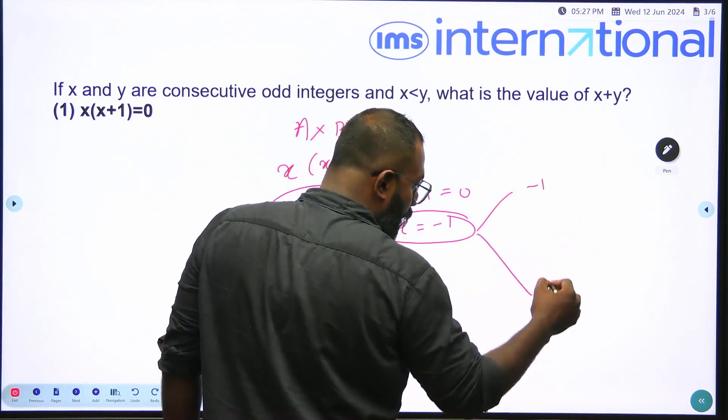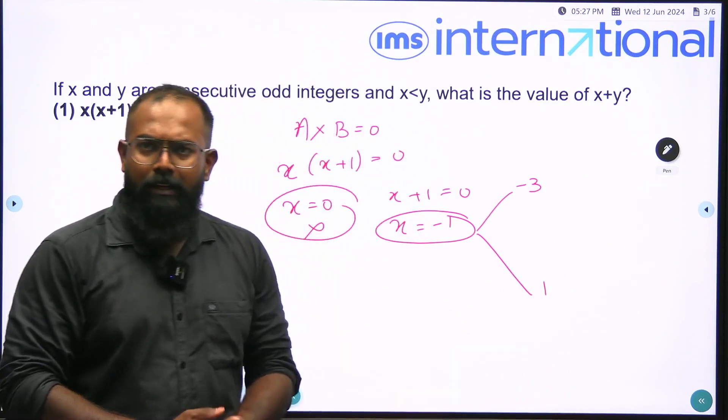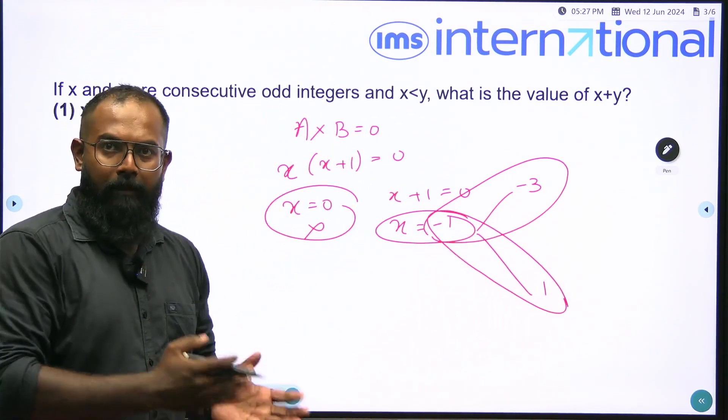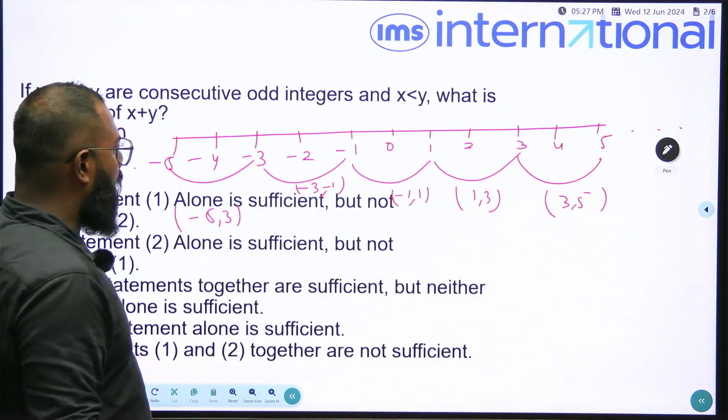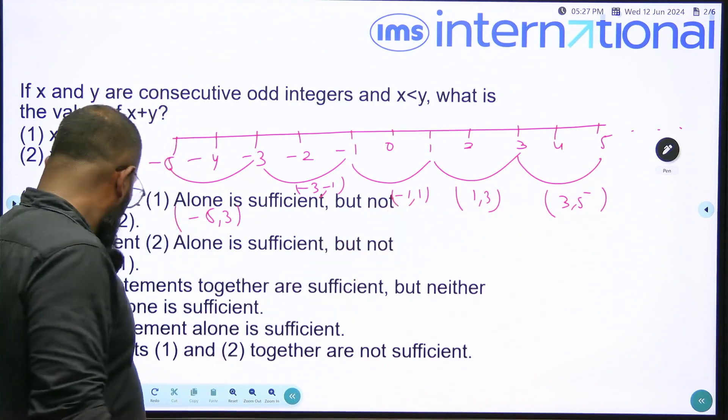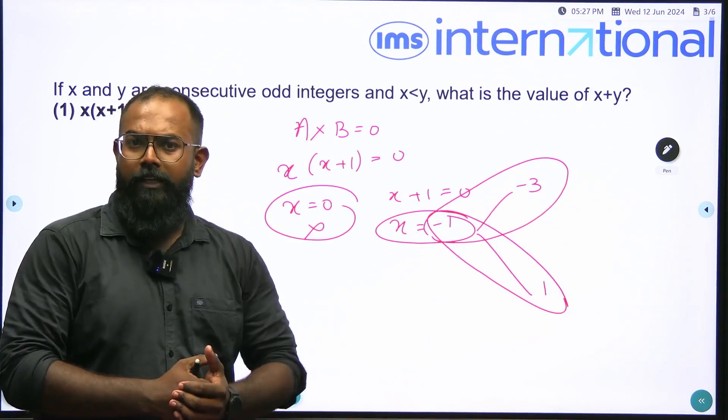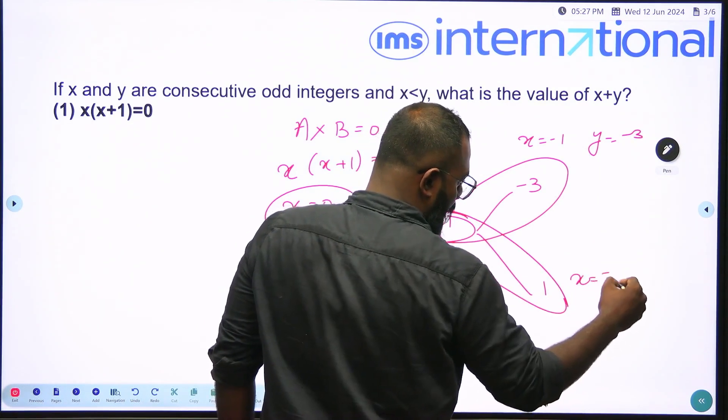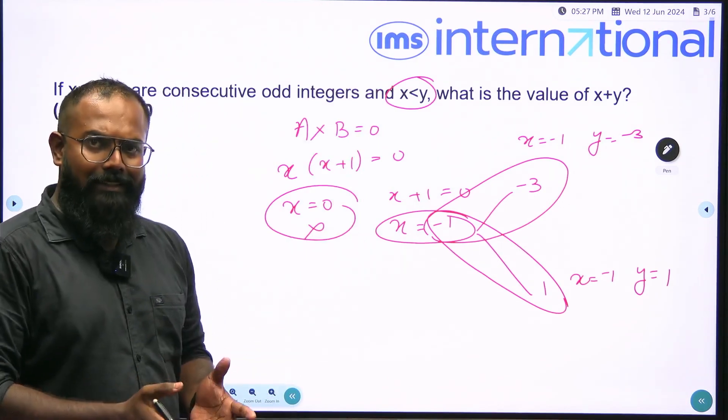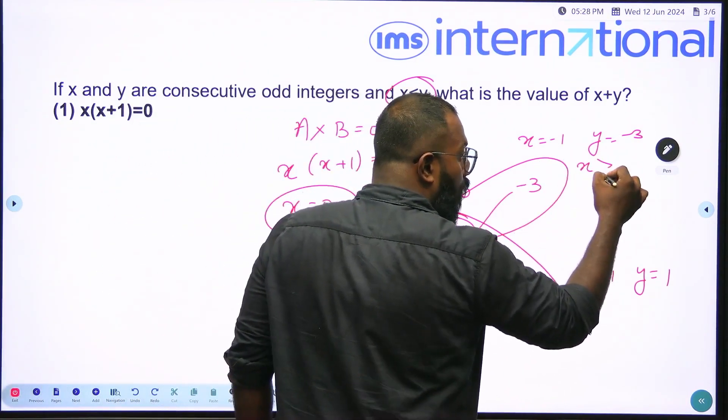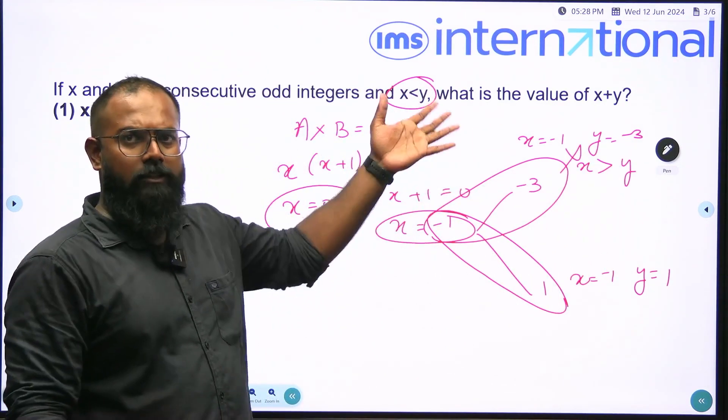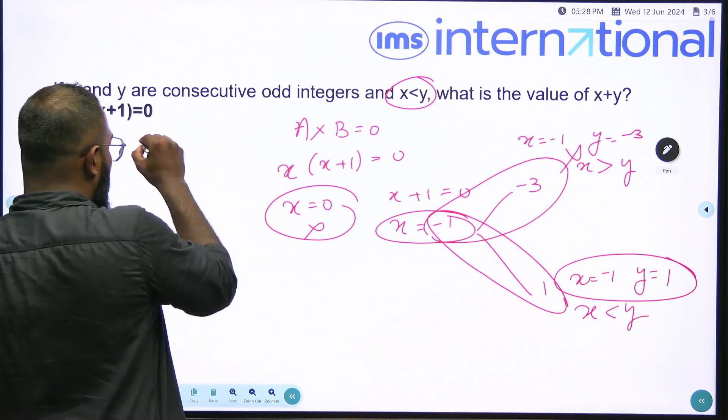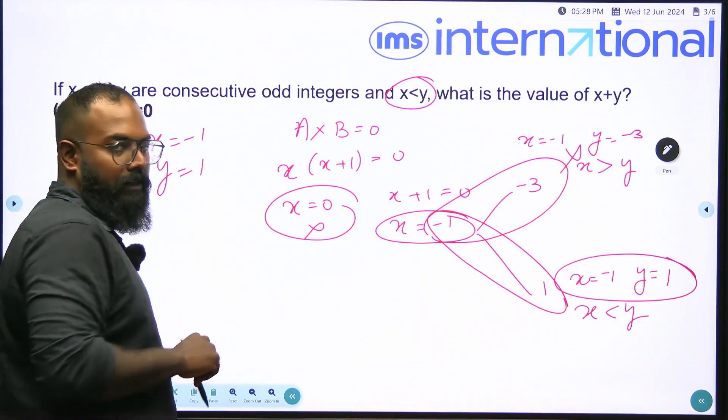What is Y? Y can either be minus 3 or 1, right? Because we can make two pairs of consecutive odd integers using minus 1 as one of the integers: minus 1 and minus 3, and minus 1 and 1. In the last screen we already discussed minus 1, minus 3 and minus 1, 1 are the two pairs. So in this case my X is minus 1 and Y is minus 3. In this case my X is minus 1 and Y is 1. There is one more condition given in the question that X is less than Y. But in this case my X is more than Y, so this option is not valid. But in this case my X is less than Y, so I can go ahead with this solution. That means X is minus 1 and Y is 1.